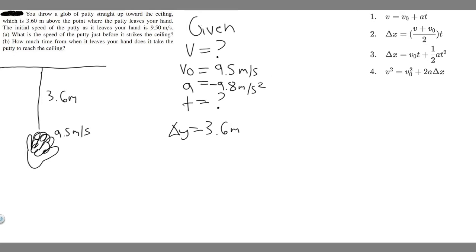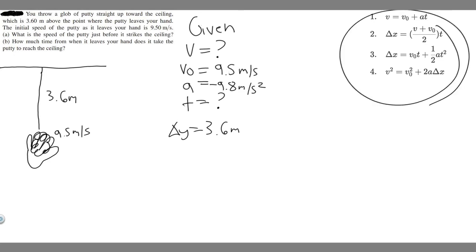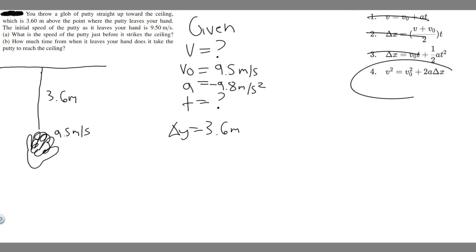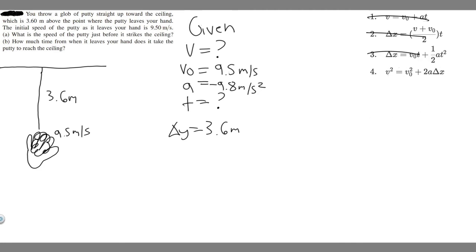So now we've got everything given. Let's start with Part A: what is the speed of the putty just before it strikes the ceiling? We determined this is V, so we're solving for V. These are the kinematic equations on the right, and we're going to use one of them. Notice how equations 1 through 3 all contain the variable T, and we don't know T, so we can't use any of those. Looking at the fourth one — it has V, V sub 0, A, and delta X — we have all of those, so we can use this equation.